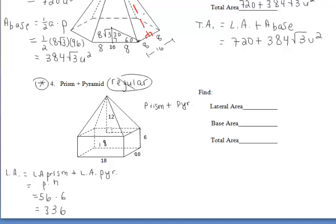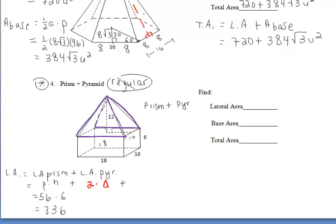For the pyramid's lateral area, we have four triangles that are not all congruent. One side of the rectangle is 10, and since opposite sides are congruent, the other side is also 10, so these two red triangles are congruent — same base of 10 and same slant height. If we find the area of one red triangle and multiply by two, we get the area of both. Similarly, the base of 18 means the two purple triangles are congruent. Finding one purple triangle's area and multiplying by two covers both.